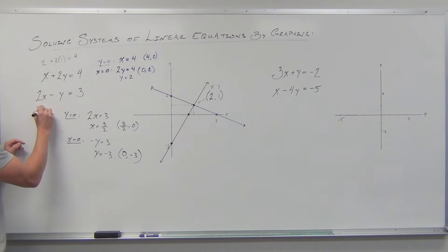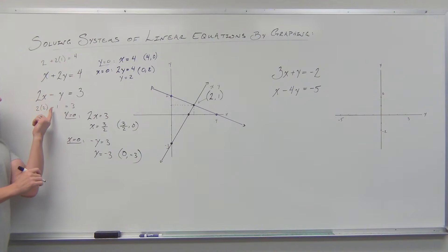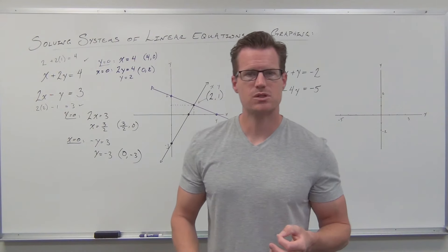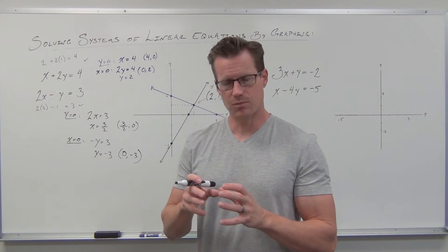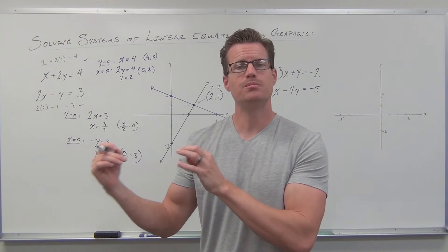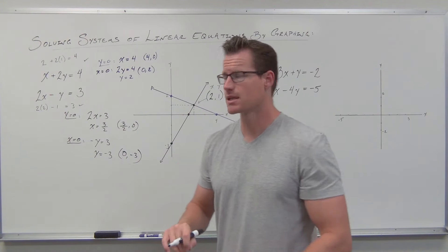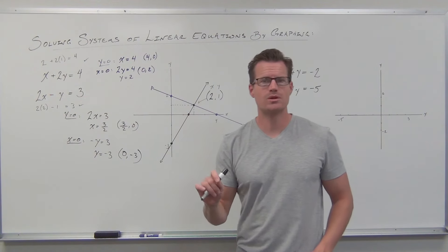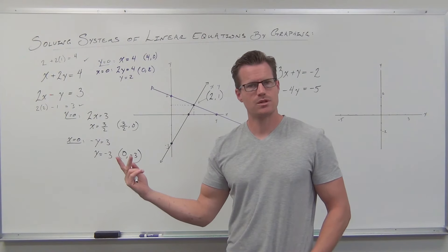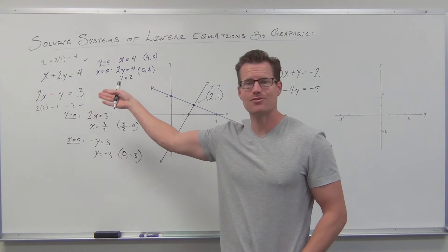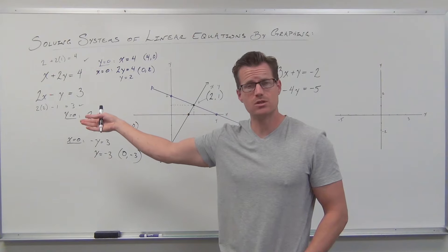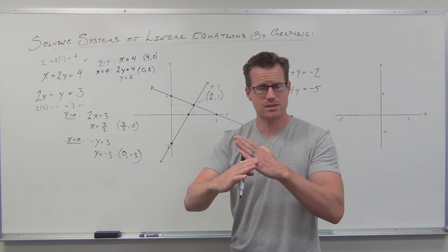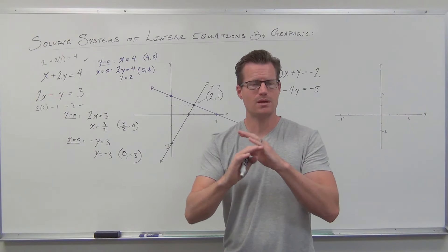So we go down to the second equation. x is two, y is one: two times two is four, minus one is three. It worked in both equations — that's the only time when you know you're right. Once you've found your point graphically, you go back to the actual algebraic equations, plug it into both, and see that it works in both. If it does, you have found your solution. This is the solution to that system of linear equations — (2, 1). Notice how it's not just one number anymore — you've got two variables, and you're getting two numbers, one for each variable. That's why the graphs work: you have a way to represent two variables at the same time.